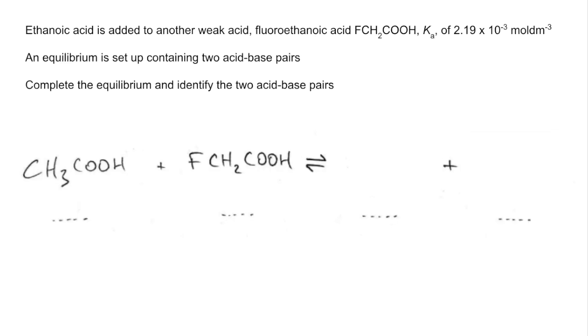The question then went on to this acid-base pairs question. We're given some extra information about another weak acid, fluoroethanoic acid, with a Ka value of 2.19 times 10 to the minus 3 moles per decimetre cubed. We've got to establish the species on the other side of the equilibrium and identify the two acid-base pairs. Again, pause the video and then play on when you're ready.